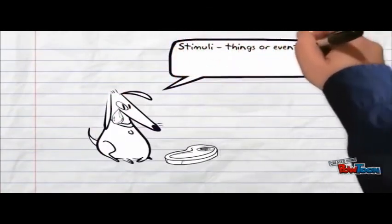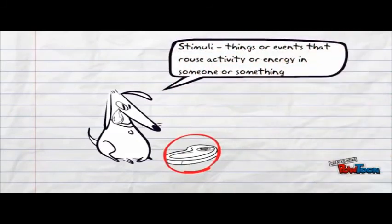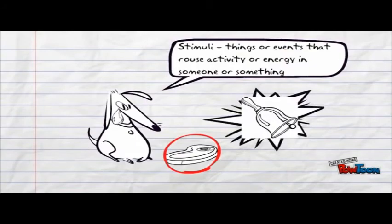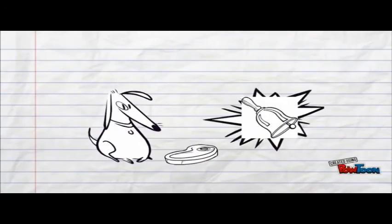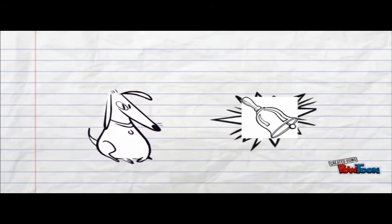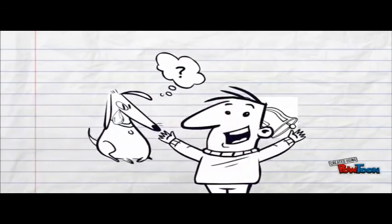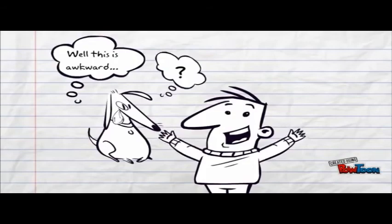Pavlov first identified the stimulus — the food — that caused the dogs to salivate. Then he paired the stimulus with a separate incident: the sound of a bell. Every time Pavlov brought the dogs food, he rang a bell. Once the dogs got used to the sound of the bell at feeding time, Pavlov tried ringing the bell without giving the dogs any food — and the dogs started drooling anyway. Pavlov had successfully trained the dogs to react to the new stimulus, the ringing of the bell, the same way they reacted to food.